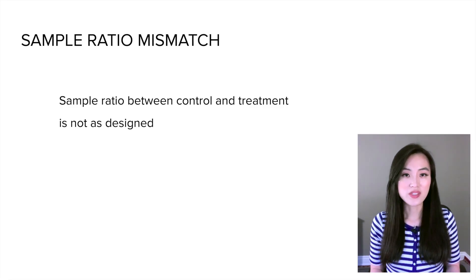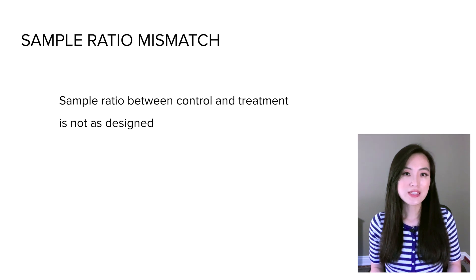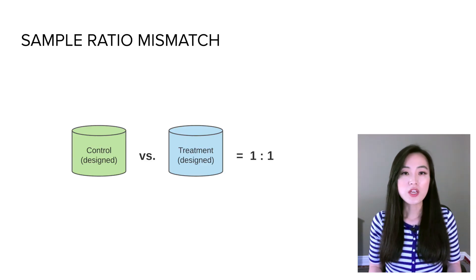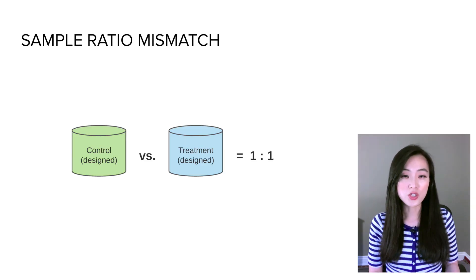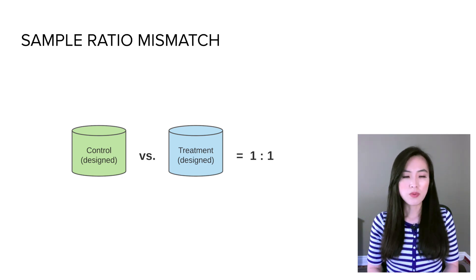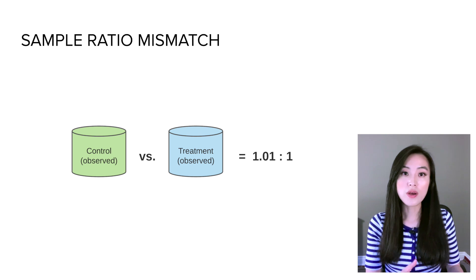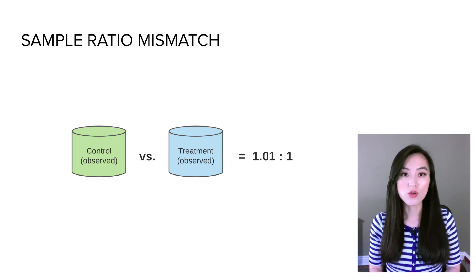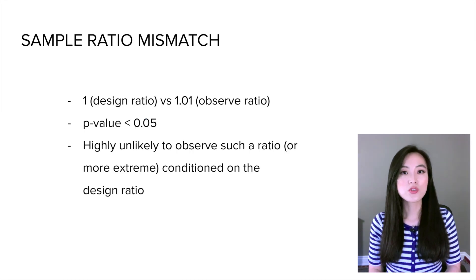One common issue that makes results unreliable is sample ratio mismatch. It refers to the instance where the sample ratio between control and treatment is not as designed. For example, if the experiment is designed for a one-to-one ratio between control and treatment, but after running the experiment you observe a ratio of 1.01 — meaning the control group has more users than the treatment group.